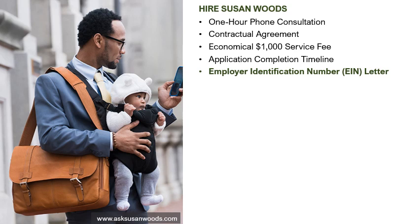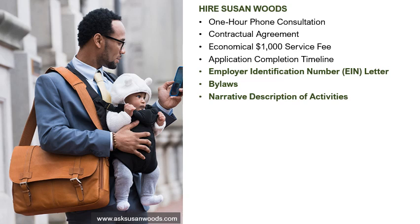The first document I generate for you is the employer identification number or EIN letter. All nonprofit organizations must have an EIN letter included in the application packet to be considered for 501c3 status, and I generate that EIN letter on your behalf. The second document I complete from scratch is the bylaws, which govern the operation of your nonprofit organization, so it has to be specifically created for your organization. Then there is the narrative description of activities — a document I create from scratch to outline all of the steps and things you are planning to do in your community, explicitly describing the activities you'll provide through your program services to help people reach their full potential.